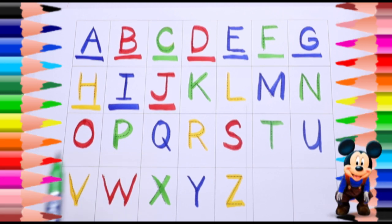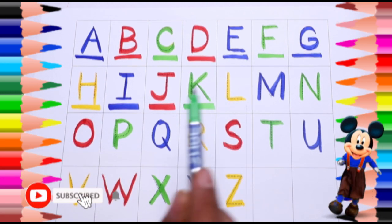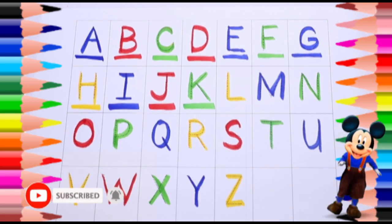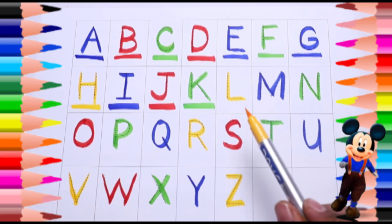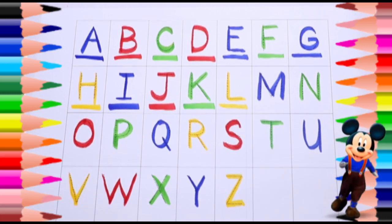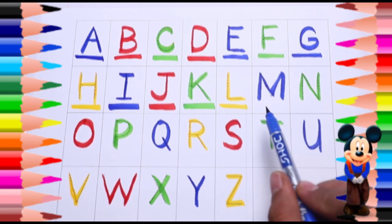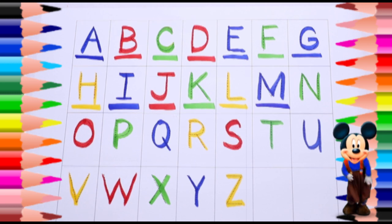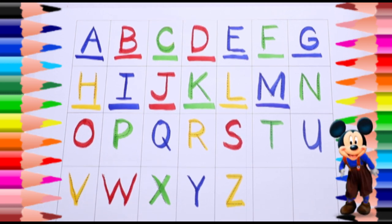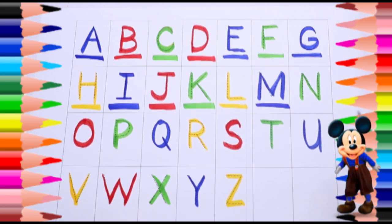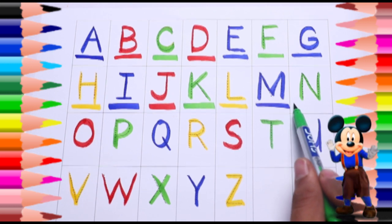K, green color. K for kite. L, yellow color. L for lion. M, blue color. M for monkey. N, green color. N for nest.